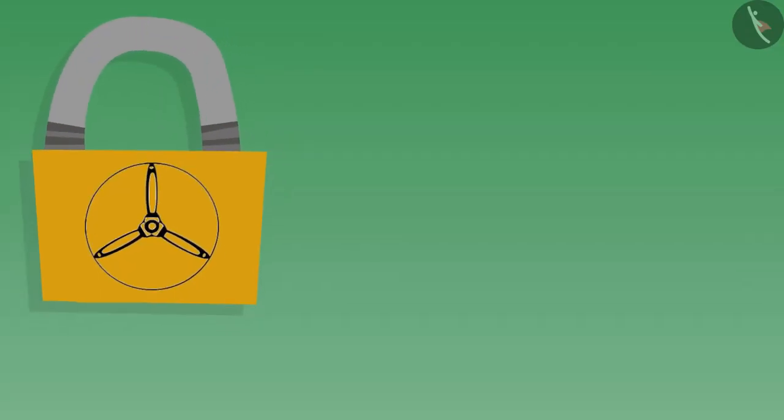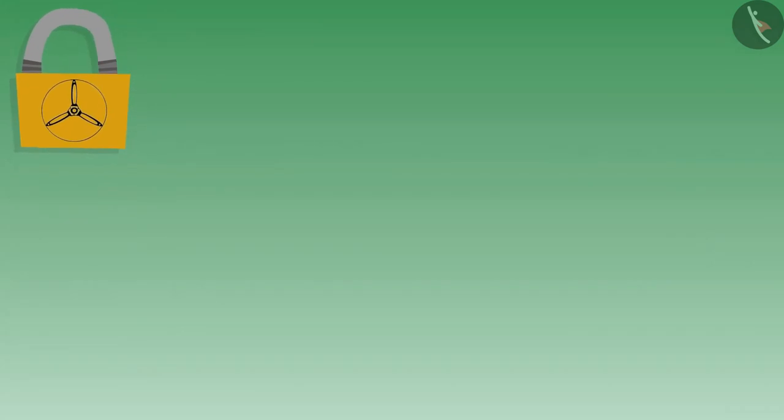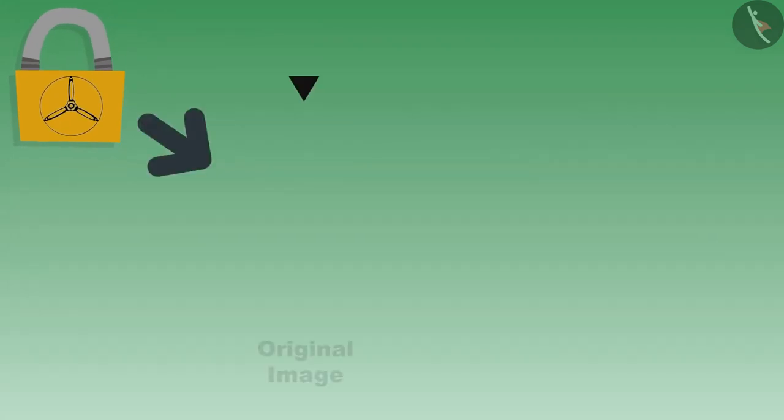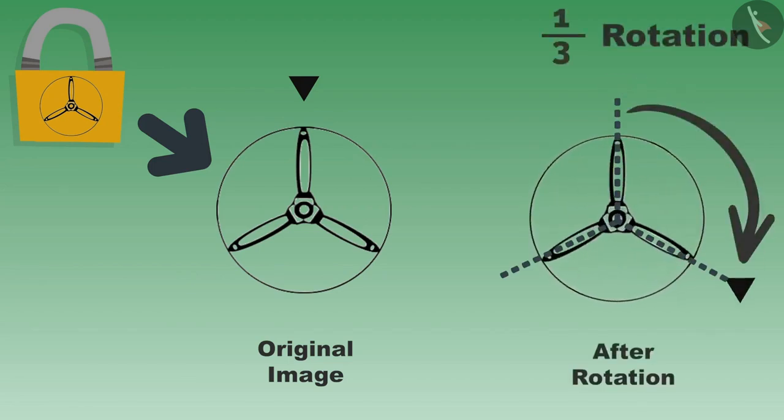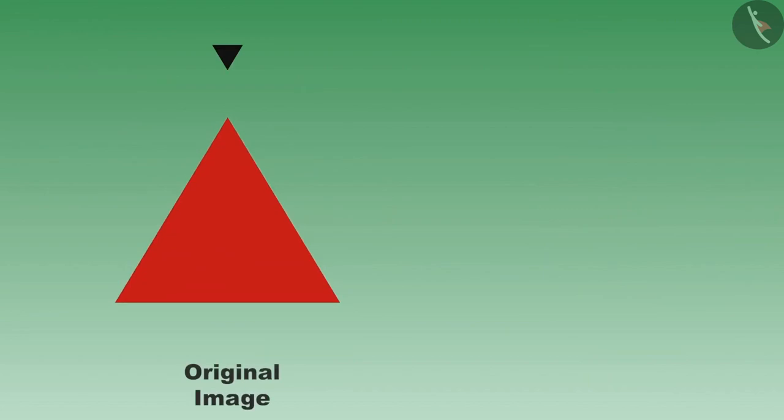I keenly observed both the locks. First, the shape of the first lock was such that it looked the same even after one-third rotation. Dear students, let us understand the cleverness of Tenali Rama. Look at this picture. Let us rotate by one-sixth.